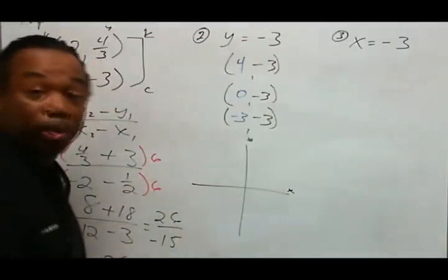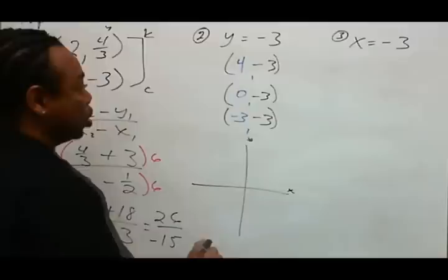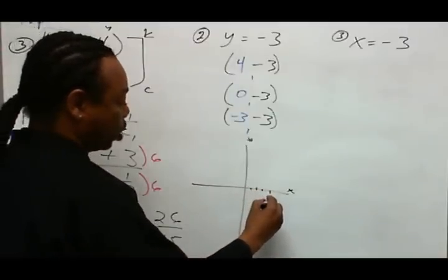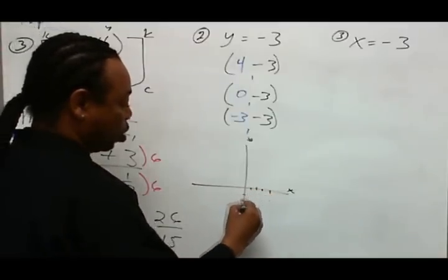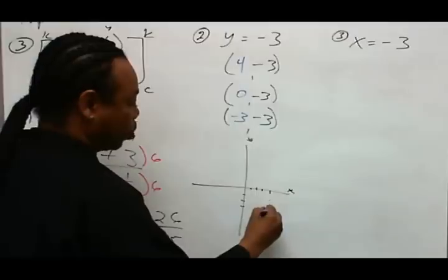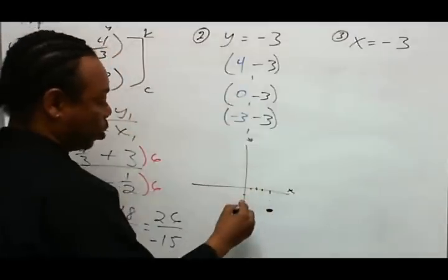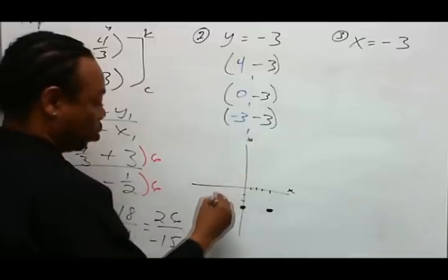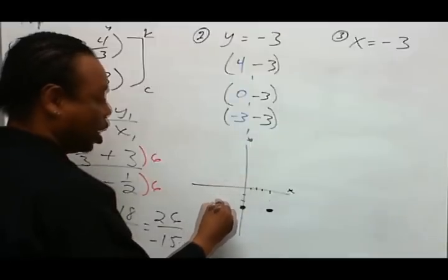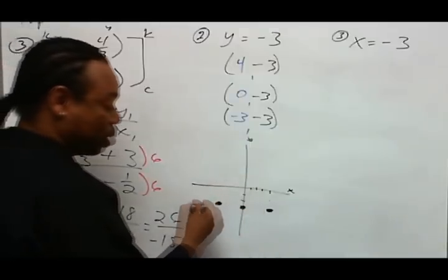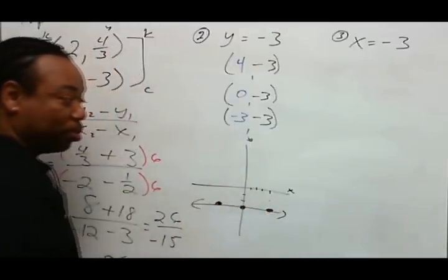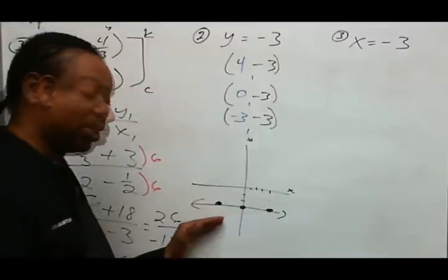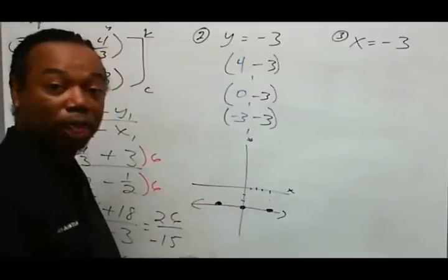We can use any real number for x. So the point (4, -3) is here, (0, -3) is here, and (-3, -3) is about here. It does indeed make a horizontal line. So you have your three points, they're labeled, and there's your graph.